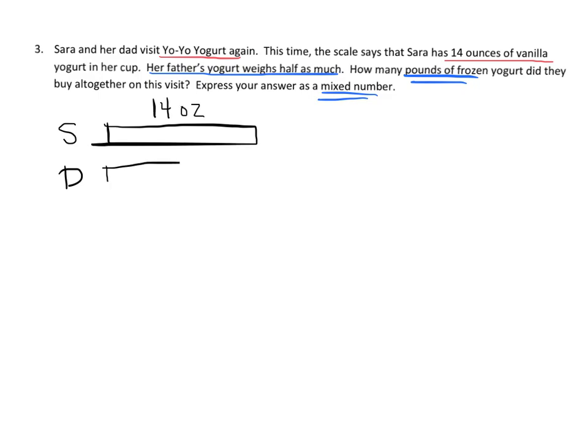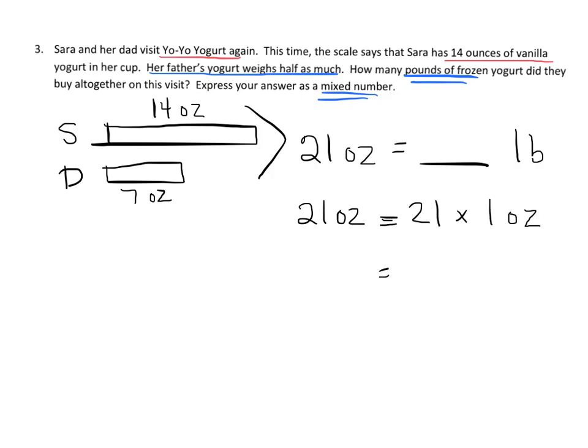Dad bought half as much. So that means her father's yogurt weighs half as much. So he has seven ounces. So we now have 21 total, 21 ounces, and we want to turn 21 ounces into pounds. So we know that 21 ounces is equal to 21 times one ounce, and then that's 21 times one sixteenth of a pound.